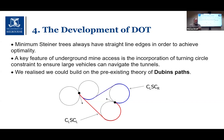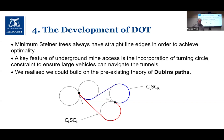One thing we realized from working with industry was that the turning circle constraint was really important for designing underground access networks. This is a problem because minimum Steiner trees always have straight-line edges to achieve optimality. The question is: how do we satisfy turning circle constraints? We needed curves in our declines so that large haulage vehicles can actually navigate the tunnels. We realized we could build on existing theory of what are known as Dubins paths.